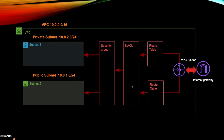As I mentioned in my earlier video, whenever you create a new VPC, by default it will create a NACL. So what is a NACL? NACL is an optional layer of security for your VPC that acts as a firewall for controlling traffic in and out of one or more subnets. Similar to a security group, you can control incoming and outgoing traffic — NACL is an optional way to add rules to do that.